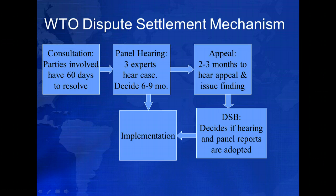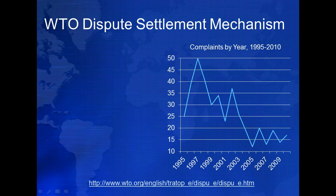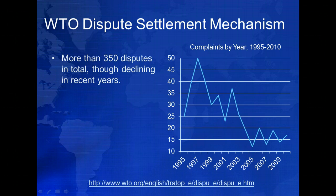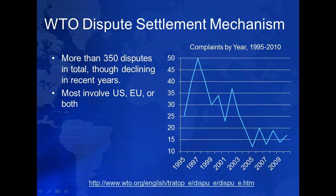If the country does not comply, the aggrieved country is permitted to impose countervailing tariffs against the violating country's exports, up to the amount of the penalty imposed by the WTO. In total, the WTO has heard more than 350 disputes since this dispute settlement mechanism was established in 1995. Perhaps not surprisingly, the vast majority of disputes to date have involved either the United States or the European Union, or frequently both, as one is the complainant and the other is the respondent.